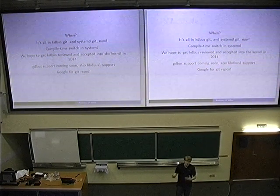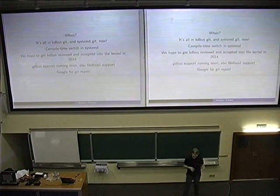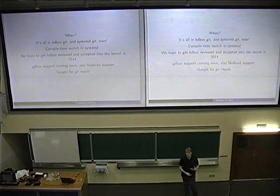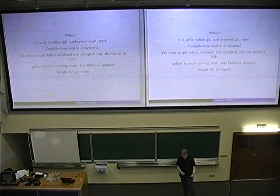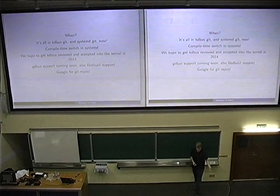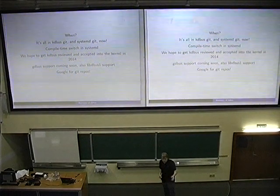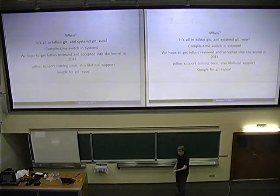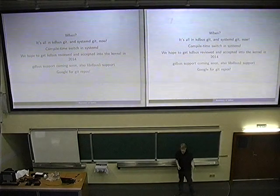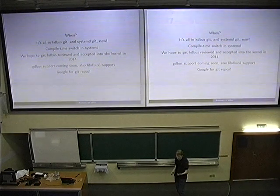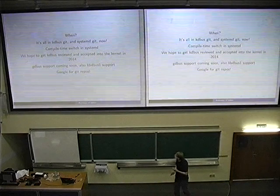Basically, the kernel will enforce a very limited set of policy modeled more like Unix access rights to files. You can say: give access to this user or this group to this service. Then you can do a couple of different things with it — like own the name or talk to it and things like that. So it's more modeled like Unix.